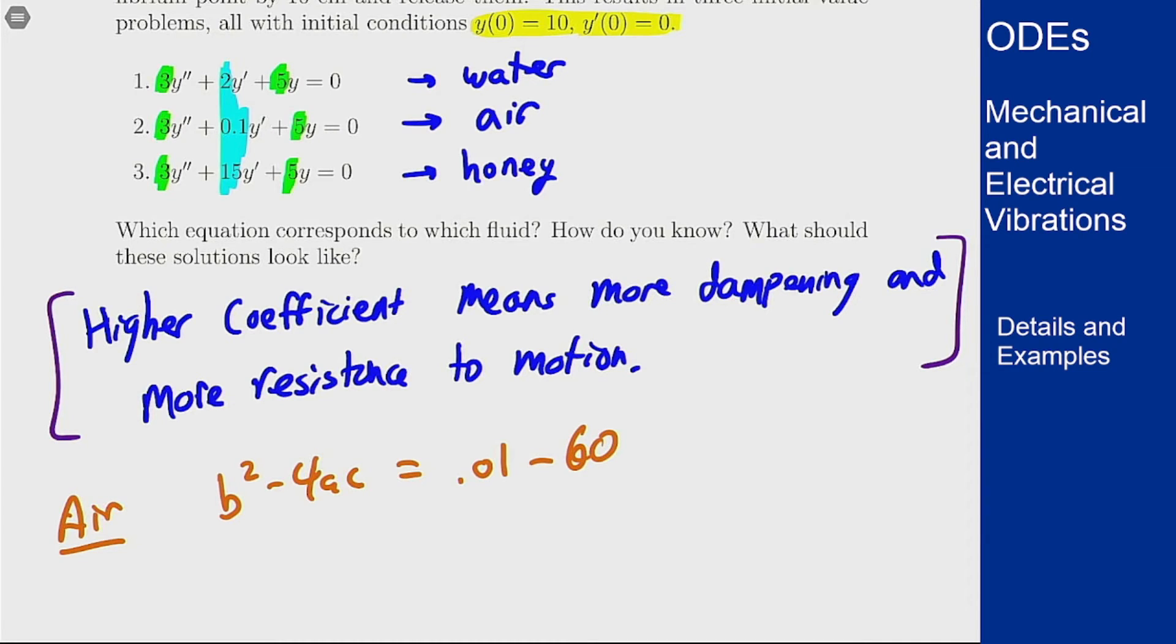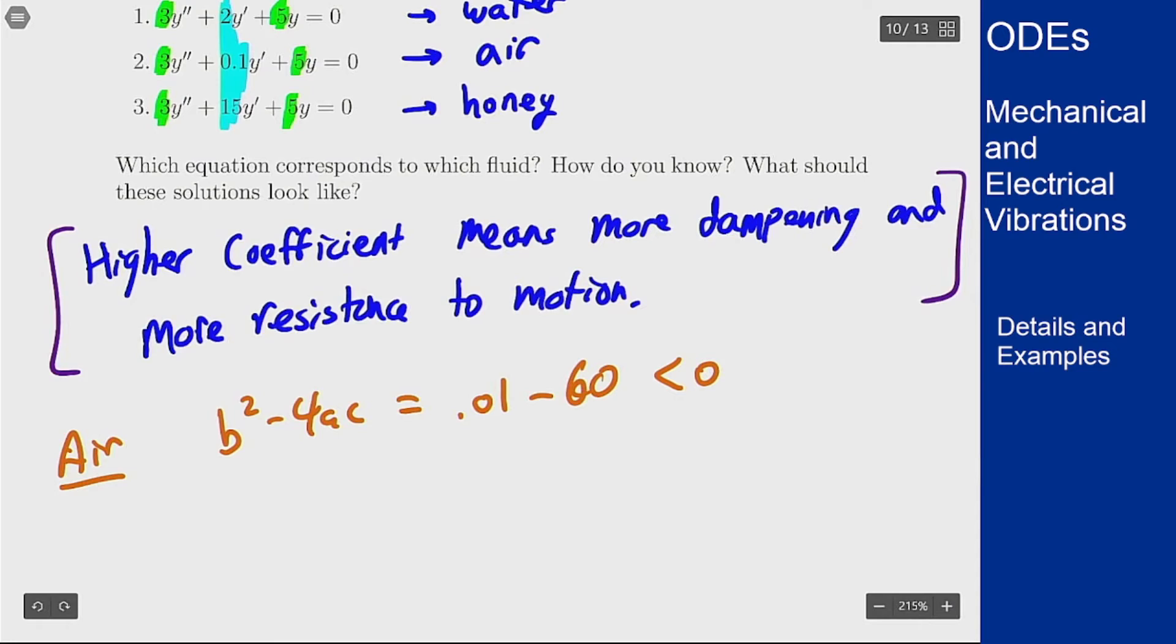And that's very negative and also very close to negative 60, which means this will be oscillating a lot and it will decay very, very slowly. So it's underdamped with a very slow decay.